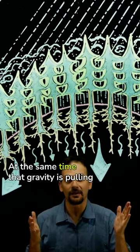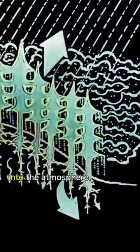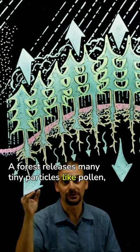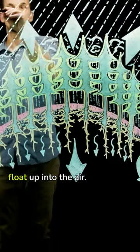At the same time that gravity is pulling the water down, the tree is also pulling the water back up into the atmosphere. A forest releases many tiny particles like pollen, leaf dust, bacteria, and fungus spores that float up into the air.